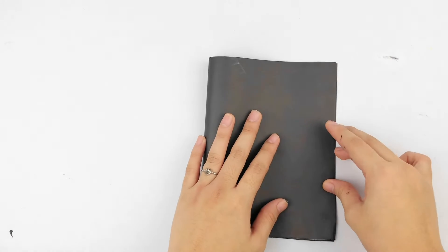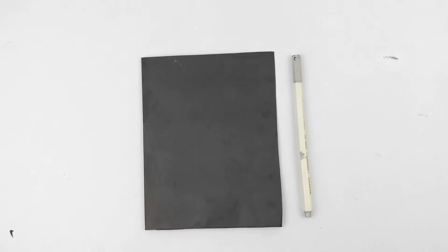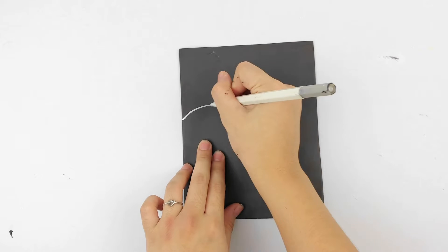Then I drew bat wings on a piece of black construction paper. I folded it in half and then just drew one wing on the fold.